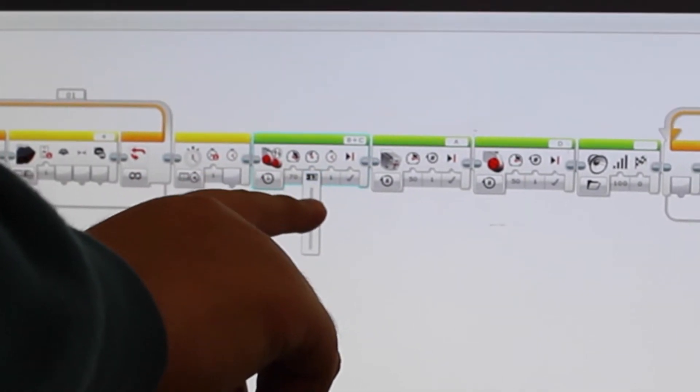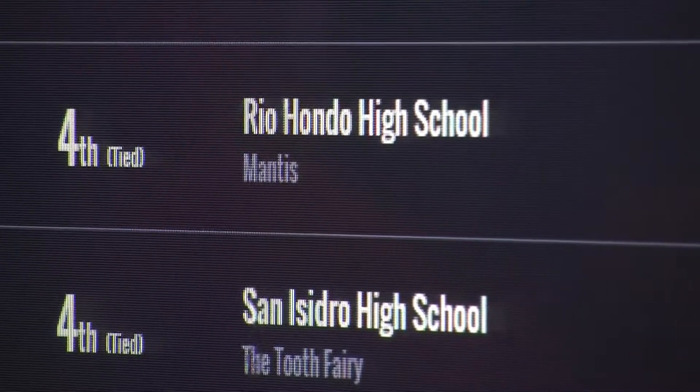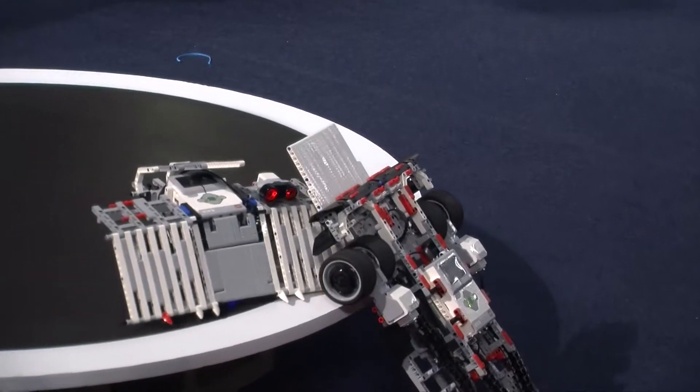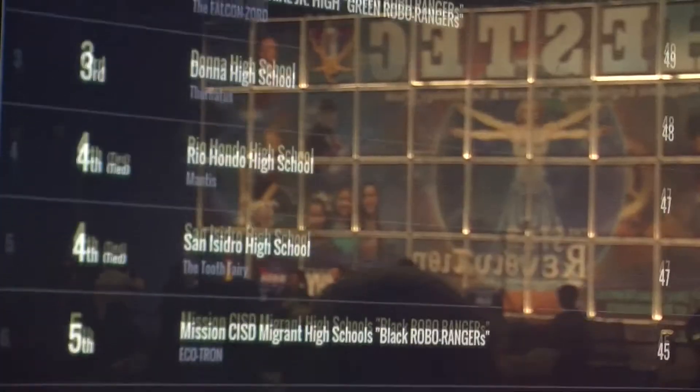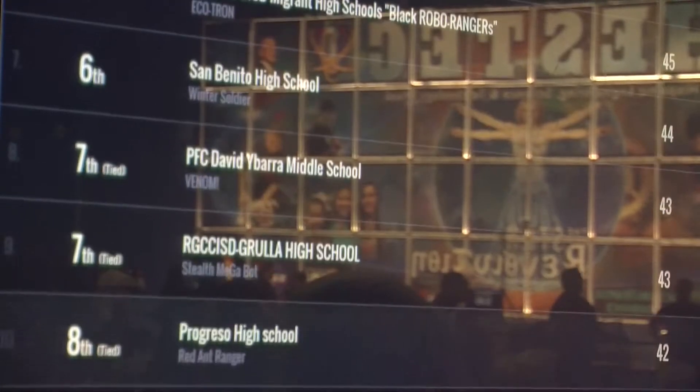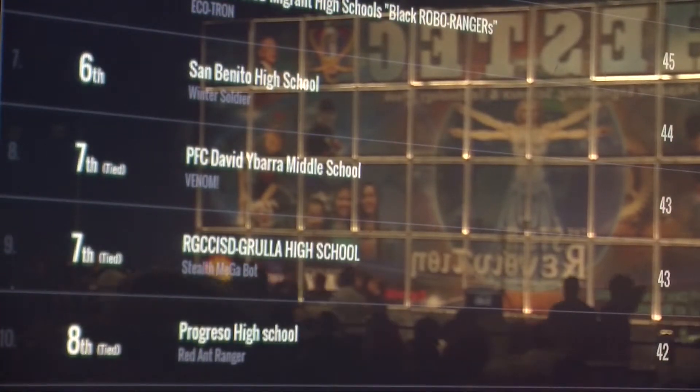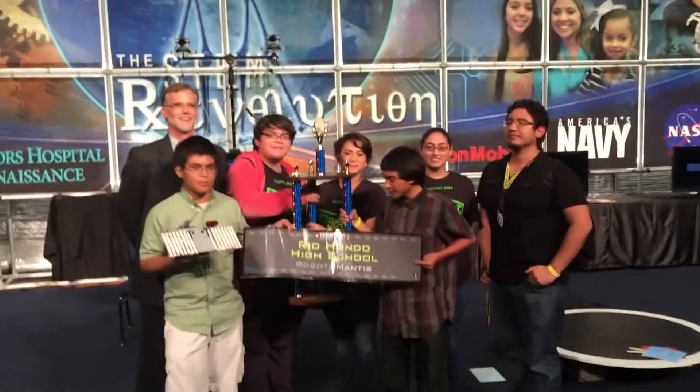After a rocky start, Rio Hondo took the lead, winning multiple three out of five matches and beat South Middle School in the final round, taking the first place title. Rio Hondo beat out the 60 competing schools from the Rio Grande Valley, making them the champions for the second consecutive year.